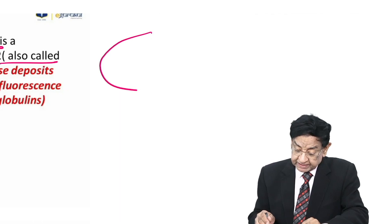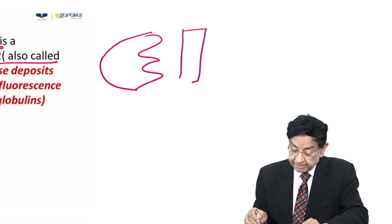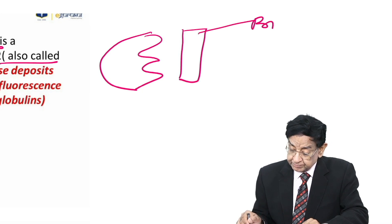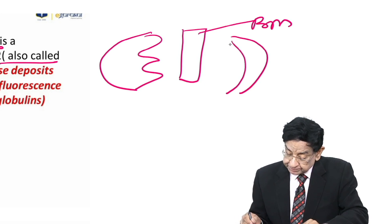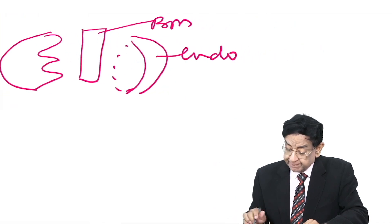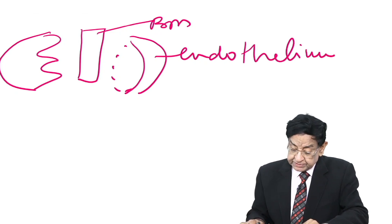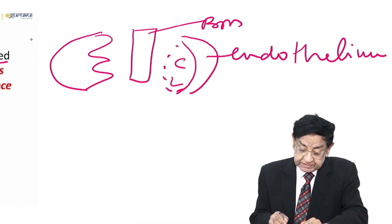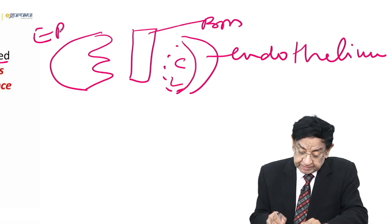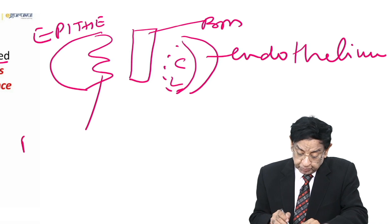This is the epithelial cell of the glomerulus. This is the glomerulus basement membrane and this is the endothelium — capillary endothelium. This is the capillary lumen. CL stands for capillary lumen where the blood is flowing. This is the epithelial cell. This is the foot process or podocyte.